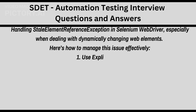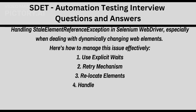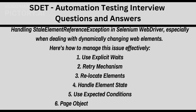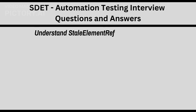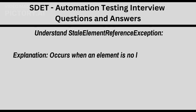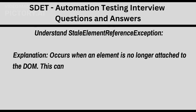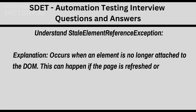1. Use explicit waits. 2. Retry mechanism. 3. Relocate elements. 4. Handle element state. 5. Use expected conditions. 6. Page Object Model integration. StaleElementReferenceException occurs when an element is no longer attached to the DOM. This can happen if the page is refreshed or updated.